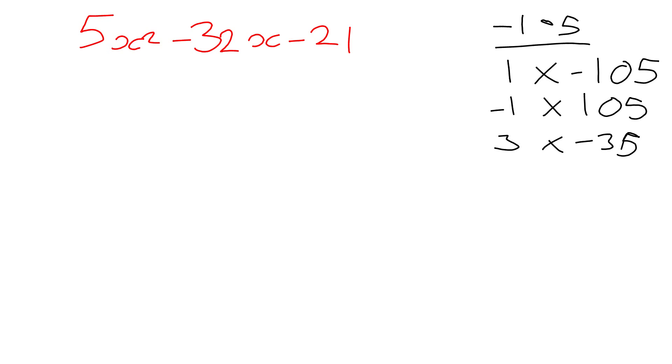2 doesn't go into 105, so we've got 3 multiplied by minus 35. And actually, when I add those ones together, I do get minus 32. So, I'm going to use those to rewrite this middle term.